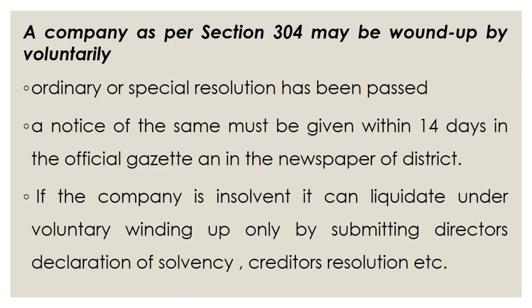As per section 304, a company may be wound up voluntarily. Section 304 refers to the circumstances or situations in which the company may be wound up voluntarily. A company may pass an ordinary or special resolution for dissolution. If the company in general meeting passes an ordinary resolution, it is for two cases: first, when the duration of the company has expired; and also if any event happens beyond the articles of association, the company wants to wind up only by passing an ordinary resolution. A special resolution can also be passed for winding up of a company.